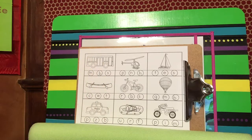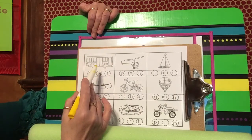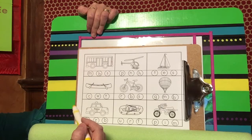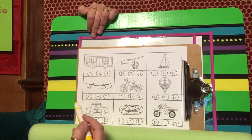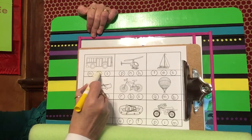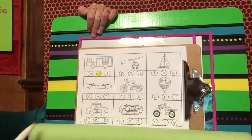This is a bus. What sound do we hear at the beginning of that word? Bus. And that is the letter B, so I'm going to color in that letter B. That's the initial sound for that word.